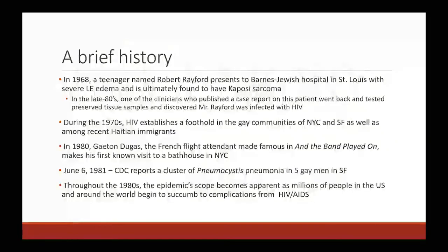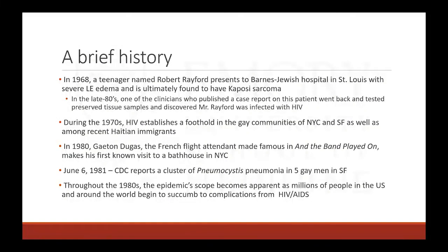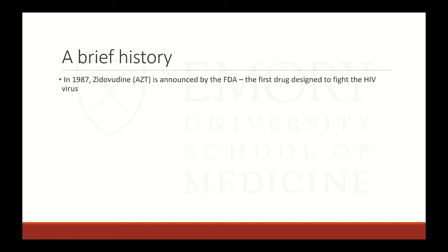In 1980, Gaetan Dugas — the famous French flight attendant from And the Band Played On — made his first known visit to a bathhouse in New York City. Although this narrative was pushed for a long time, you can see this was already a fait accompli by then. On June 6th, 1981, the CDC published a cluster of Pneumocystis pneumonia cases in five gay men in San Francisco, really setting off the age of HIV as we know it. Throughout the 1980s, millions of people in the U.S. and around the world began to suffer the complications of HIV and AIDS. In 1987, zidovudine, or AZT, was announced by the FDA — the first drug designed to fight HIV — but resistance developed quickly and clinical efficacy was limited.